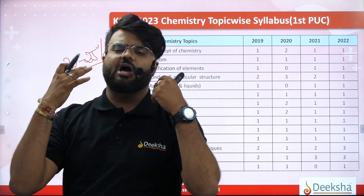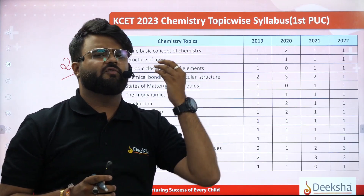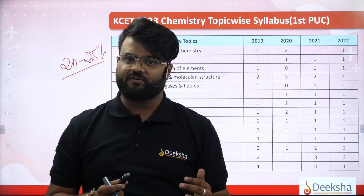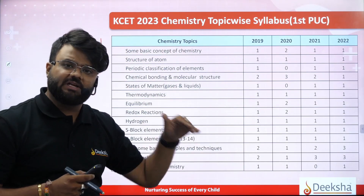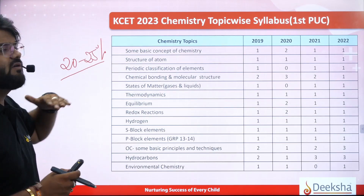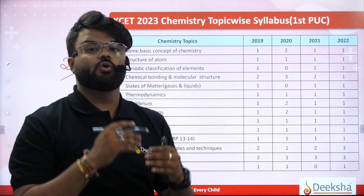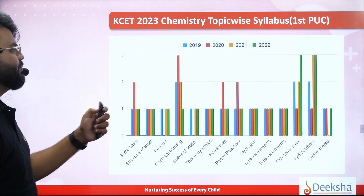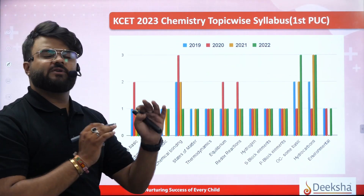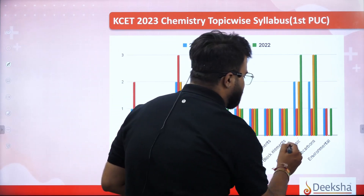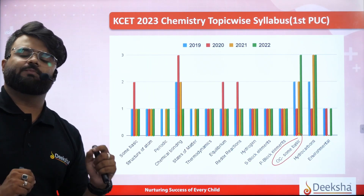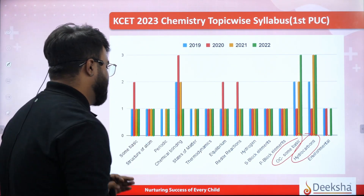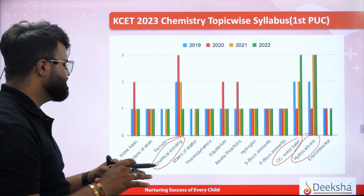After that, we have to look at the second PUC and the chemistry exam. Everyone has to put in the effort. At least 75% revision is full. We can cover the first PUC syllabus. The most important chapter to look at in the bar graph — organic chemistry of first PUC — is very important. Some basic principles and techniques, that is very important. Then coming back to hydrocarbons — that is also important. And chemical bonding — most important.